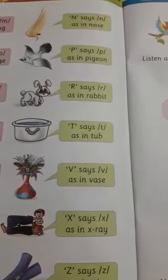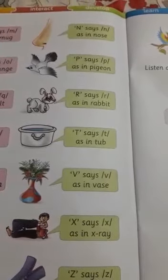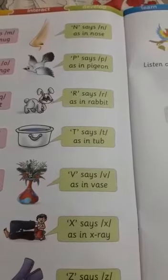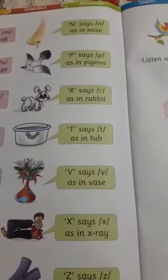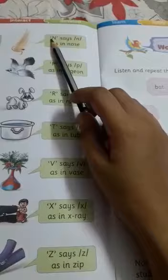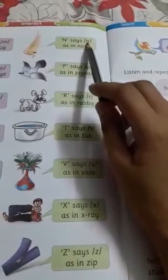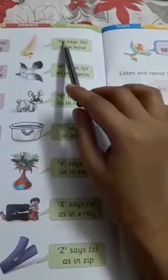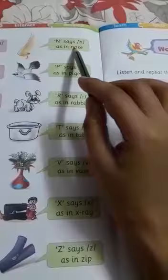Good morning class, UKG subject English, date 4th June. Today we learn about the sound of the letter. Let's start: N says N as in nose. So N is for nose — when we say nose, the sound of N seems like N.